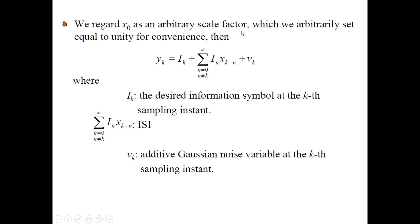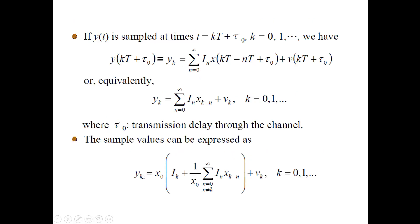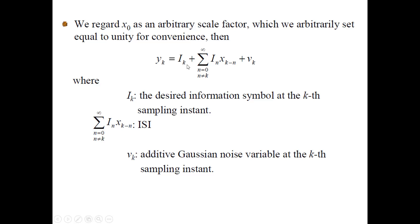With x₀ = 1, y_k becomes: y_k = i_k + Σ_{n≠k} i_n · x(k−n) + v_k. This is a very important expression. i_k is the present symbol we will be detecting at the receiver output. The summation term represents inter-symbol interference — the effect of all previous symbols on the present symbol. The last term v_k is the additive noise. i_k is the desired information symbol at the k-th sampling instant.